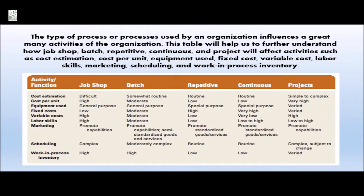The type of process or processes used by an organization influences a great many activities of the business. This table will help us further understand how job shop, batch, repetitive, continuous, and project will affect activities such as cost estimation, cost per unit, equipment use, fixed costs, variable costs, labor skills, marketing, scheduling, and work-in-process inventory.